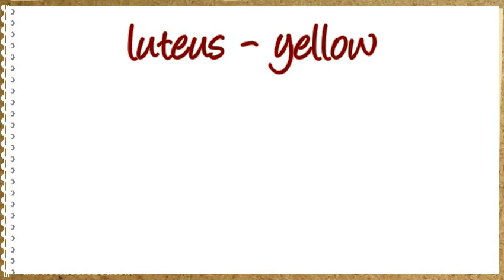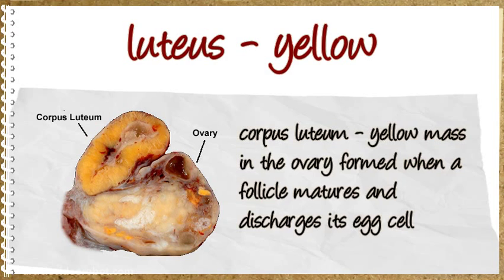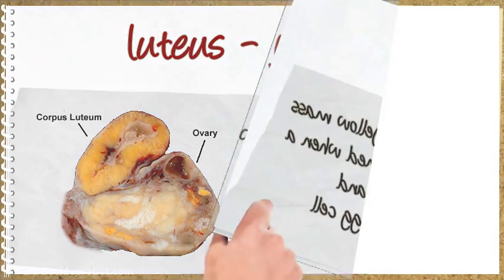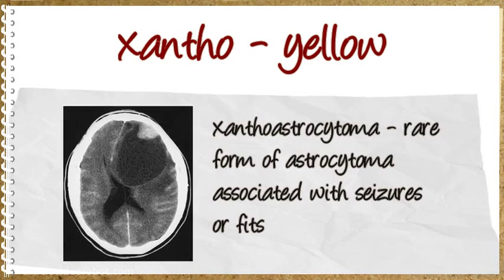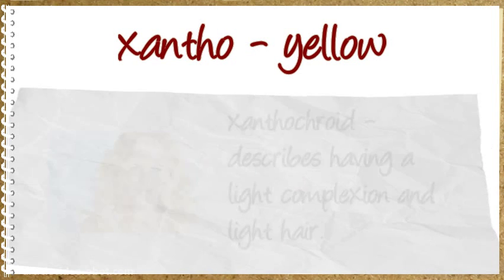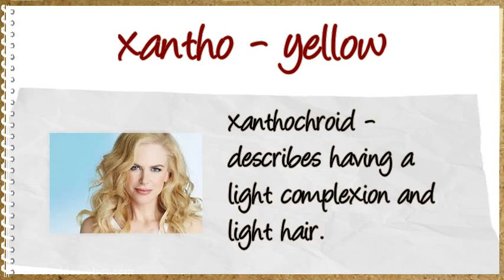Luteous means yellow. Corpus luteum: yellow mass in the ovary formed when a follicle matures and discharges its egg cell. Xantho means yellow. Xanthoastrocytoma: rare form of astrocytoma associated with seizures or fits. Xanthochroid: describes having a light complexion and light hair.